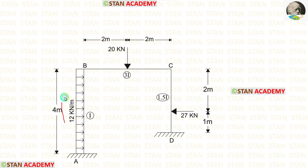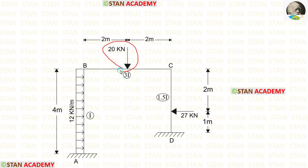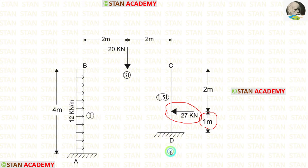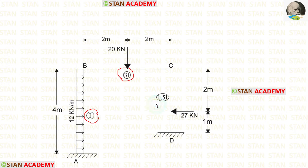In the column AB, there is a uniformly distributed load of 12 kN per meter acting for the full span. In the beam BC, there is a point load of 20 kN acting at the center. In the column CD, there is a point load of 27 kN acting at 1 meter from point D. The moment of inertia for span AB is I, for span BC is 3i, and for span CD is 1.5i.